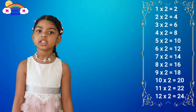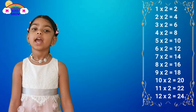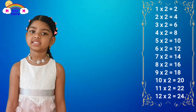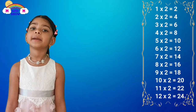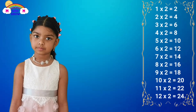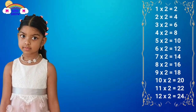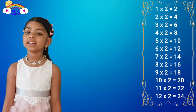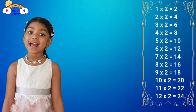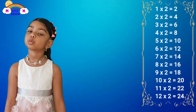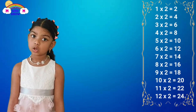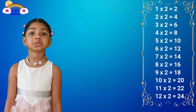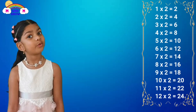Seven time two is fourteen, eight time two is sixteen, nine time two is eighty, ten time two is twenty, eleven time two is twenty-two, twelve time two is twenty-four.